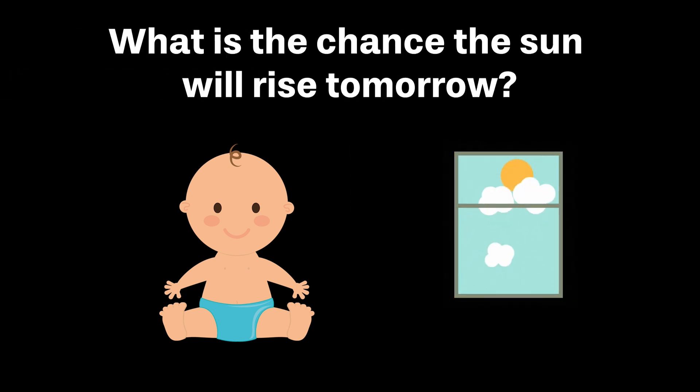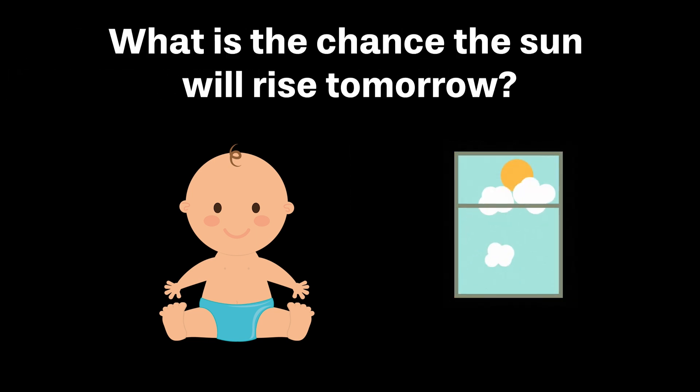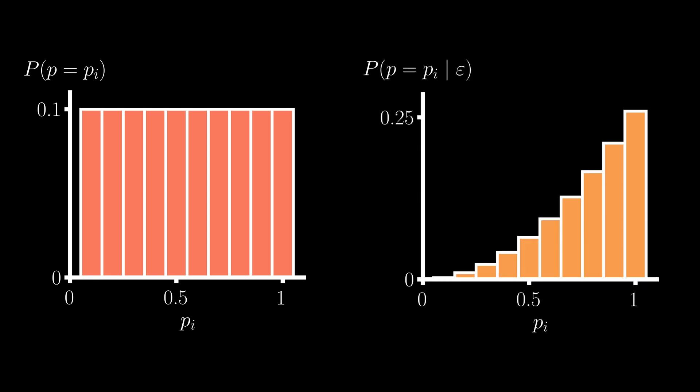And second, what is the chance the sun will rise tomorrow? At the start of the analysis, we thought that each value of p between 0.1 and 1 was equally likely. However, with this new data, we now have a posterior distribution that reflects our updated belief in terms of which p is the right one.